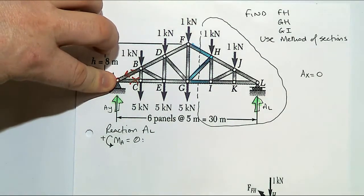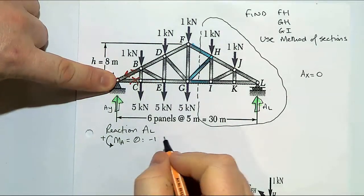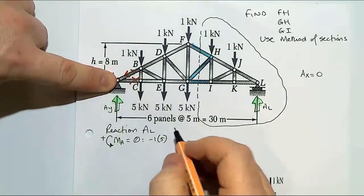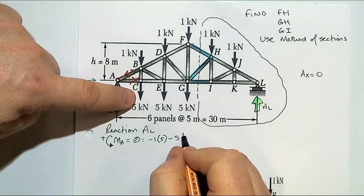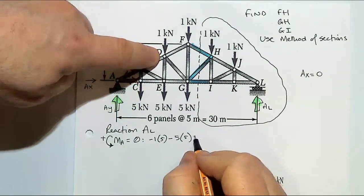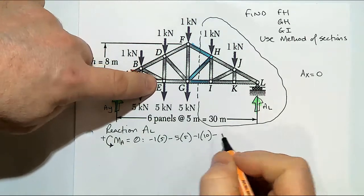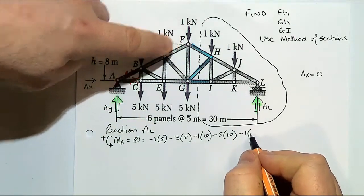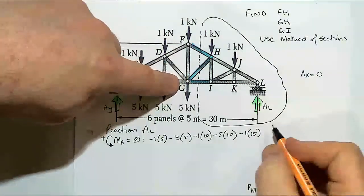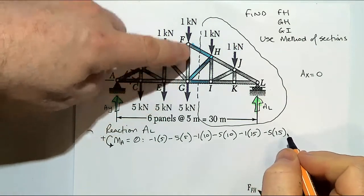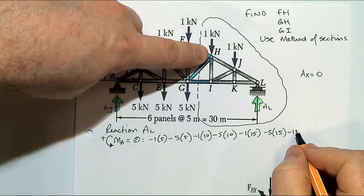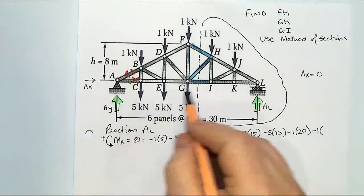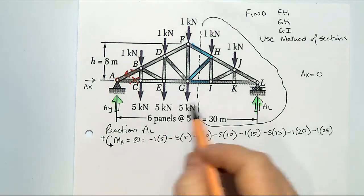So I've got minus one times by five — the six panels at five metres each — minus five times by five. Then moving on: minus one times by ten, minus five times by ten. Working along all the forces: minus one times by fifteen, minus five times by fifteen, minus one times by twenty, minus one times by twenty-five. And then at the very end we've got plus...